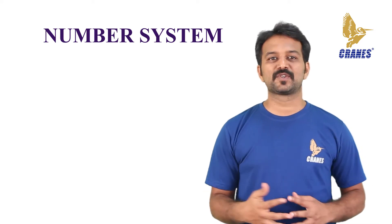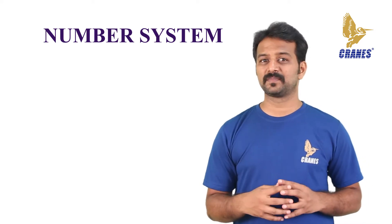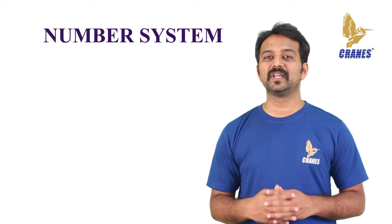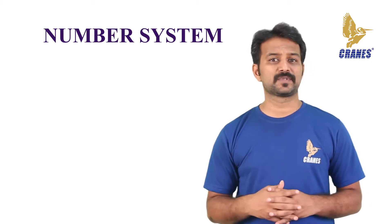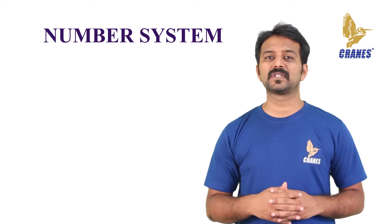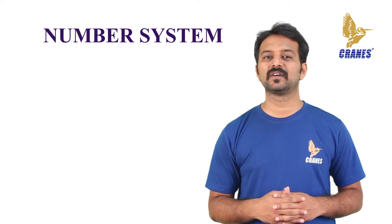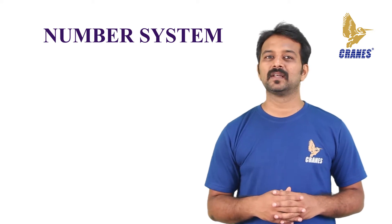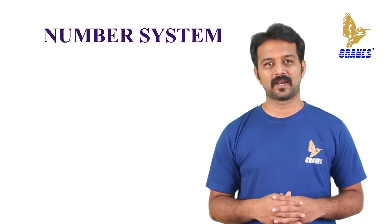The base or the radix of the number system is the total number of digits used in that number system. For example, if the number system represents digits from 0 to 9, then the base of the system is 10.